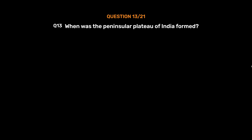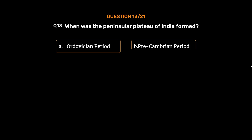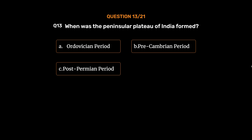Question number 13: When was the peninsular plateau of India formed? Option A: Ordovician Period. Option B: Precambrian Period. Option C: Post-Permian Period. Option D: Devonian Period. The correct answer is Option B, Precambrian Period.